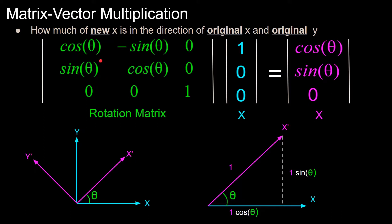The second column vector tells you where the Y axis basis vector ends up after the rotation: negative sine theta, cosine theta, and 0, which is where the Y axis ends up. The third column is 0, 0, 1 for the Z axis, because this is a rotation about the Z axis, so the Z stays stationary.